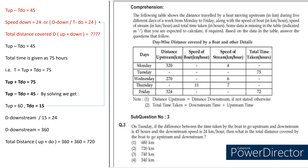Now we have two equations: T_upstream minus T_downstream equals 45, and T_upstream plus T_downstream equals 75. Solving gives T_upstream equals 60 and T_downstream equals 15. Substituting downstream time into the speed equation: distance divided by 15 equals 24, so D equals 360. This is only the downstream distance, but they ask for both upstream and downstream. So 360 plus 360 gives the answer as 720.